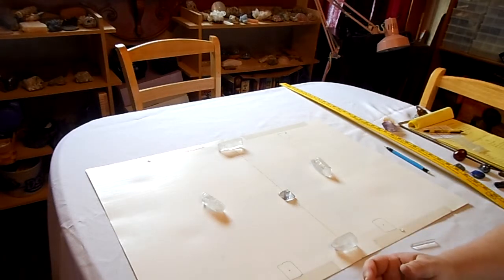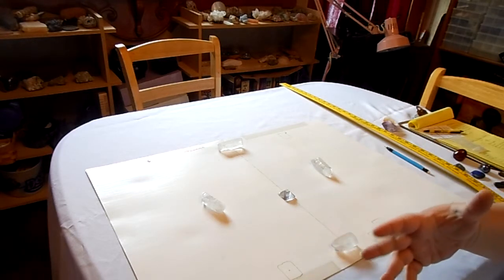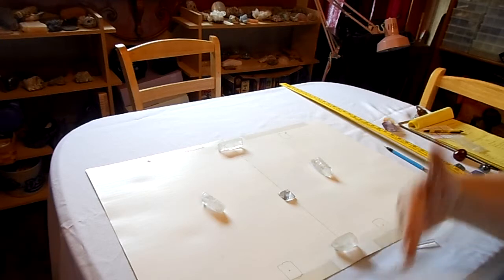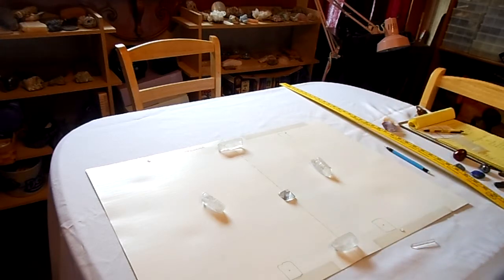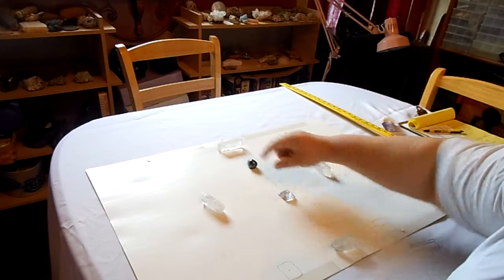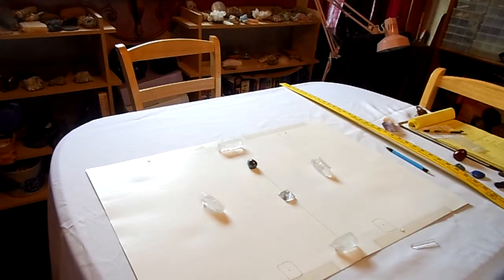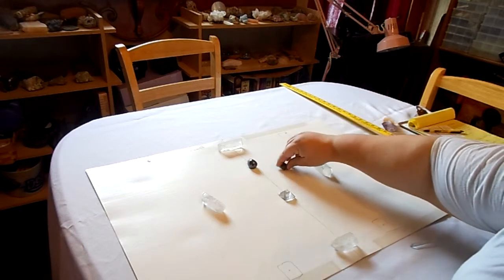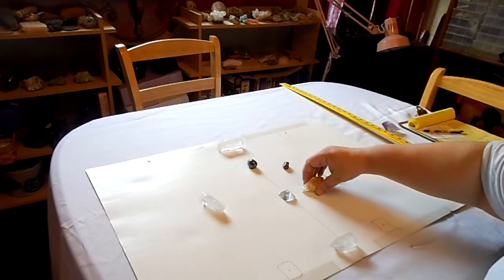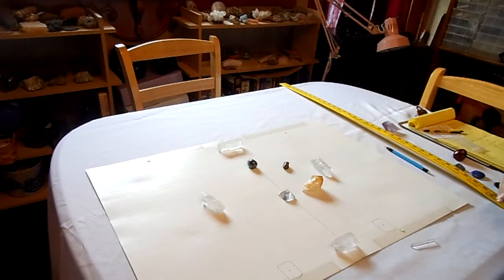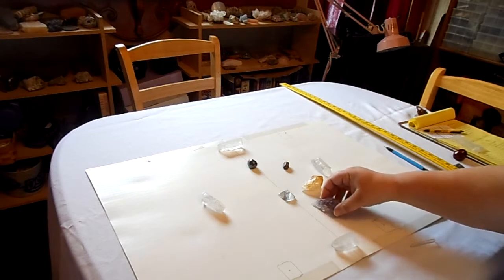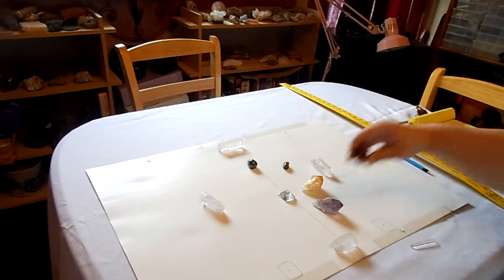Now we're going to lay out the crystals for intention. My intention for this grid is to have something that helps support me doing my work, helps to keep me focused, helps to keep me grounded, helps to keep me progressing through the job that I'm trying to do. So I'm going to start with the north. And in the north, I'm going to put hematite. In the northeast, I'm going to put copper. In the east, I'm going to put citrine. In the southeast, I'm going to put amethyst. In the south, I'm going to use carnelian.